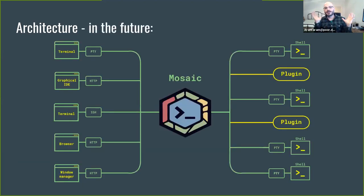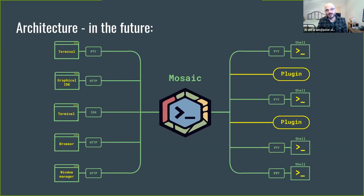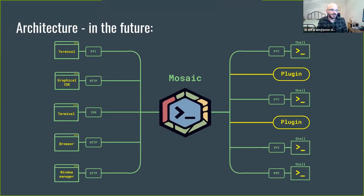This is how I envision the future architecture of Mosaic — having several clients of several kinds connected to the same Mosaic instance running several sessions. Some clients can be collaborating, some working independently, Mosaic connecting to different shells, PTYs, and plugins. It can also be on a remote server, or conceivably even a service on the net that you connect to.